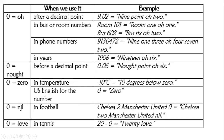El cero también se dice 'nil' en fútbol — Chelsea two, Manchester United nil. Y existe la terminación 'love' para decir cero en tenis — twenty love, como un marcador.